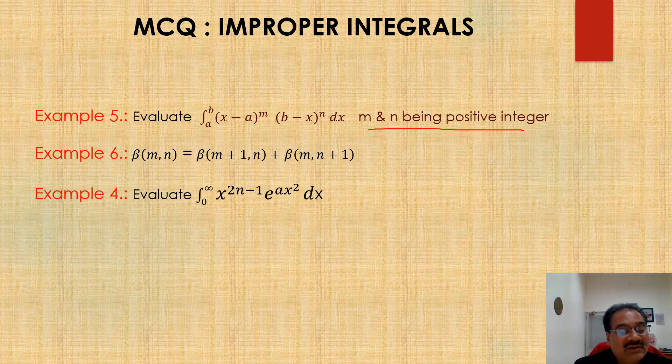And last example is example number 7. Example 7 is evaluate 0 to infinity x power 2n minus 1 e power x square dx.